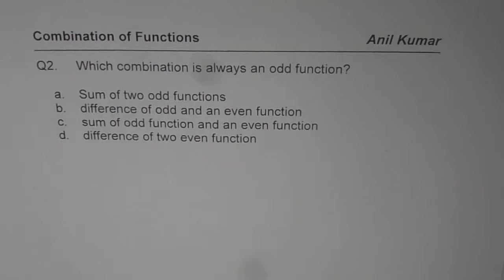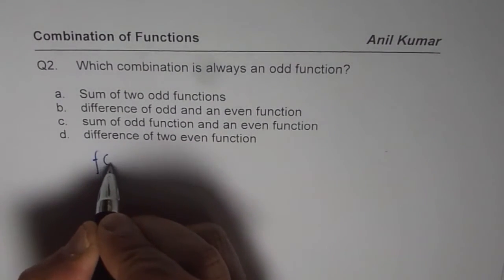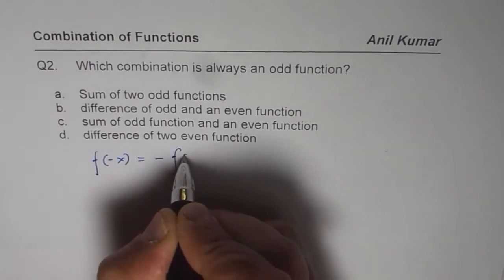So you have to tell which combination is always an odd function. I hope you remember what odd function is. Odd function is that f of minus x should be equals to minus of f of x.